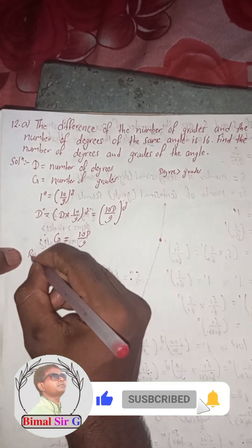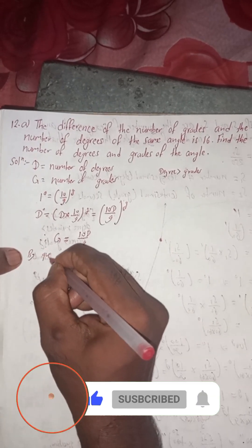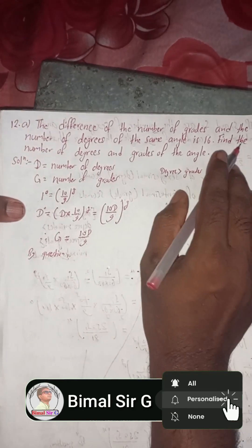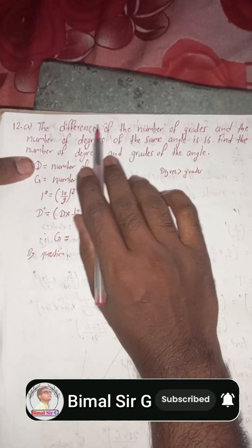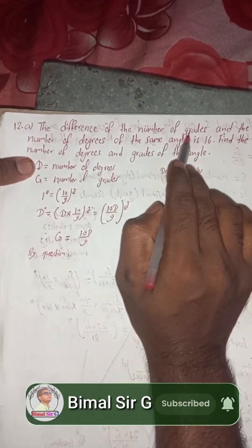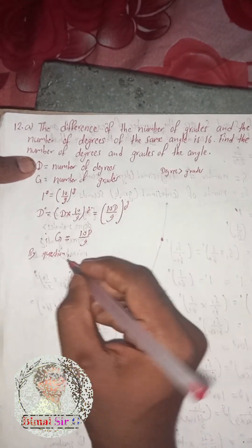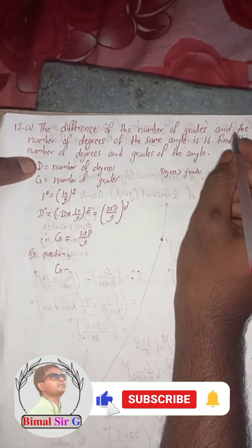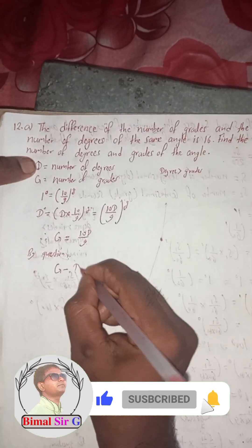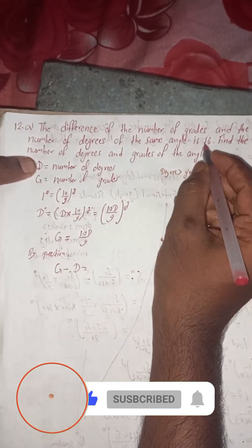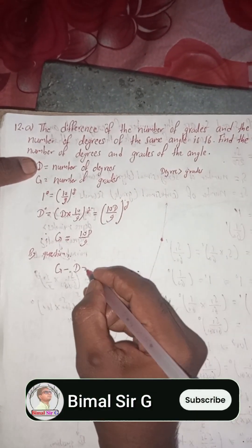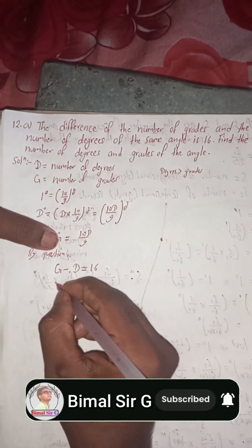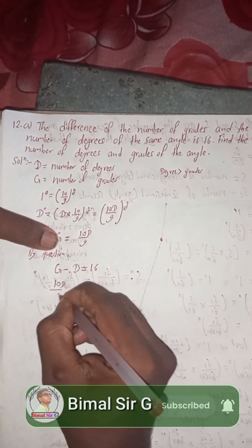Now by the question: the difference of the number of grades and the number of degrees is 16. So we write G minus D is equal to 16.